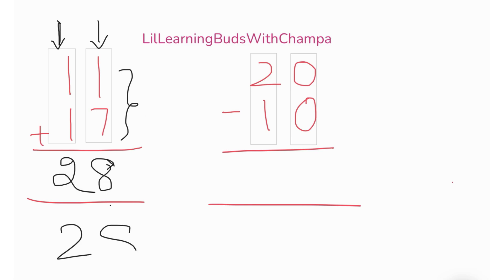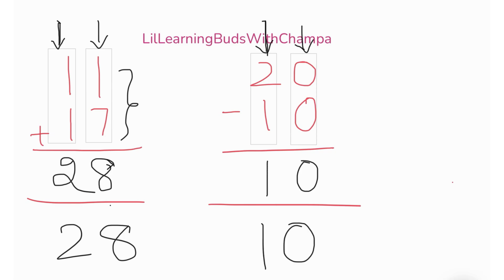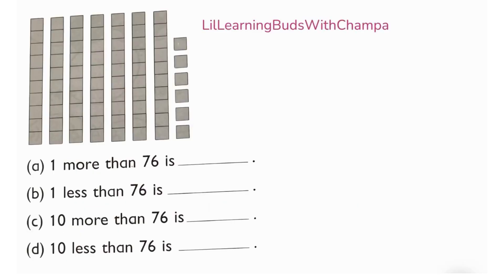One plus one is two, so the total is 28. Now similarly, let's do a simple two-digit subtraction. I have grouped already — this is the ones place, this is the tens place. Ones place: zero minus zero is zero, and the tens place: two minus one is one, so the answer is 10.